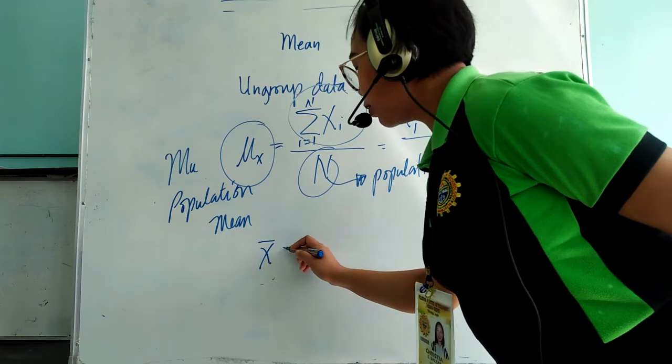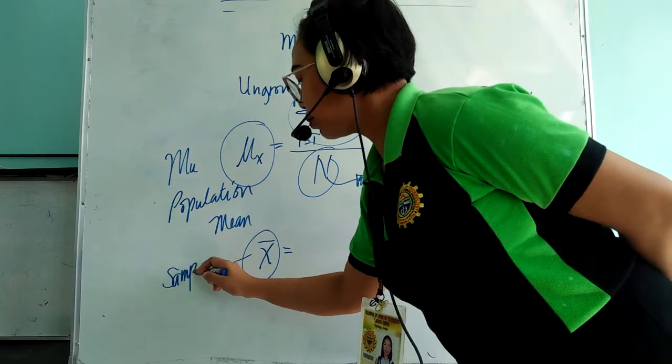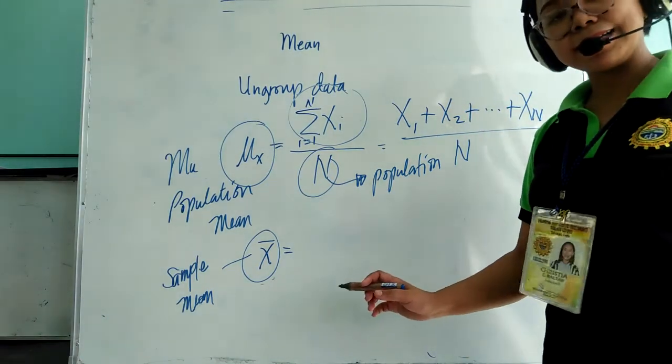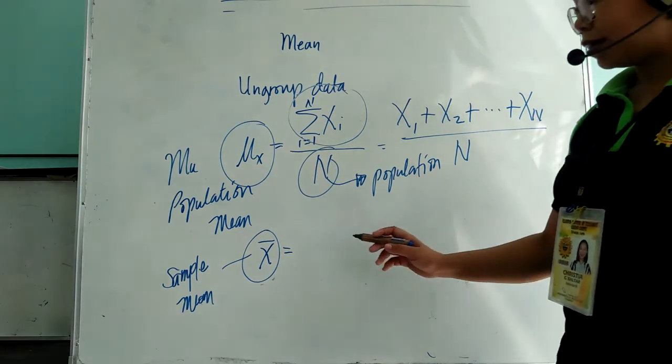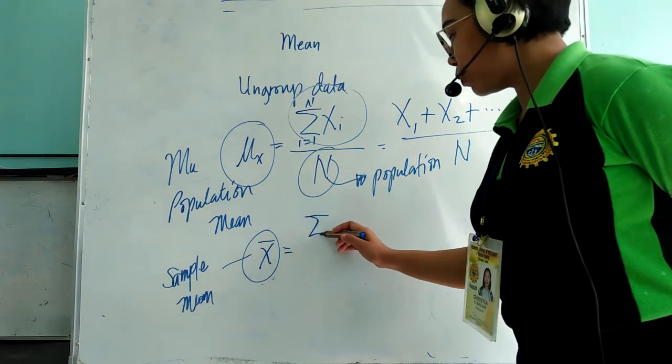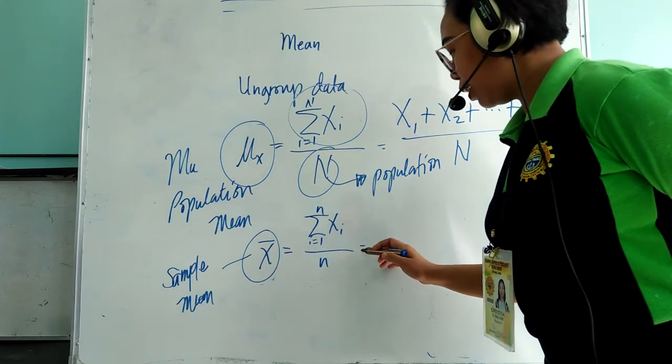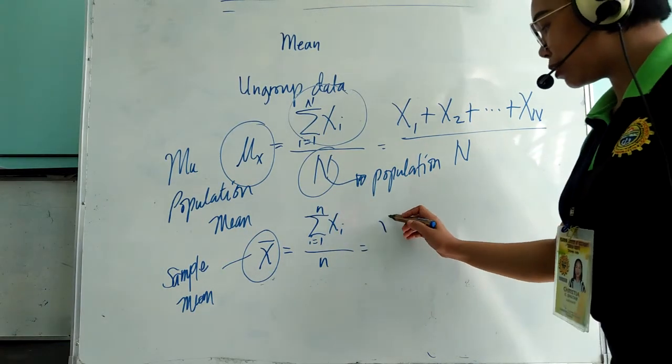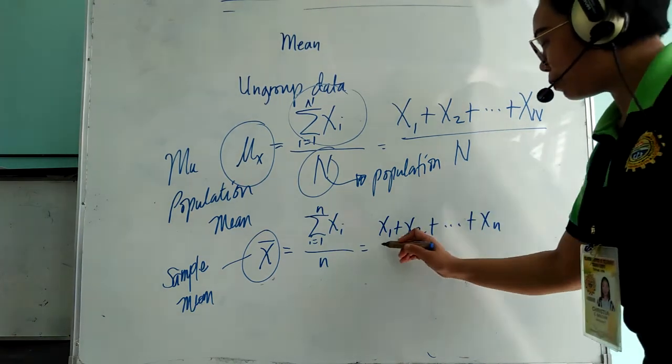X bar on the other hand is the notation for the sample mean. The notation for the sample mean is read as x bar which is equal to the sum of x sub i from 1 to small n. So the expanded form of the summation notation is x sub 1 plus x sub 2 plus x sub 3 plus x sub n.